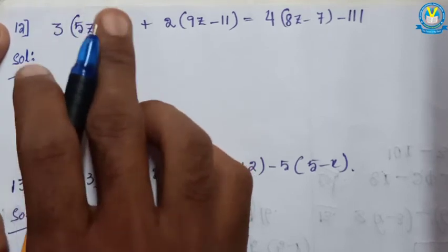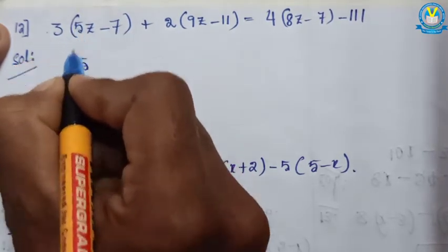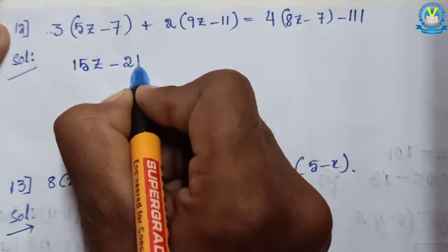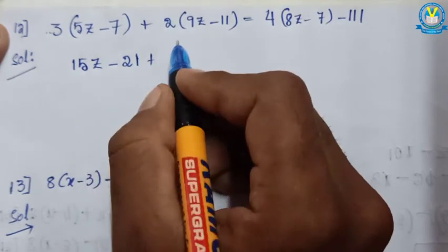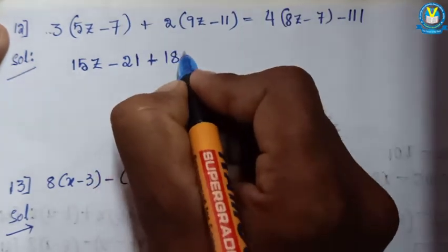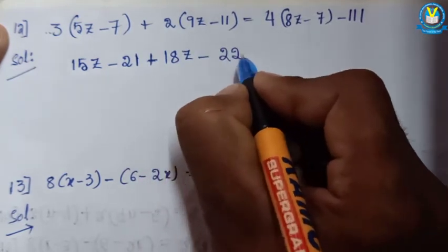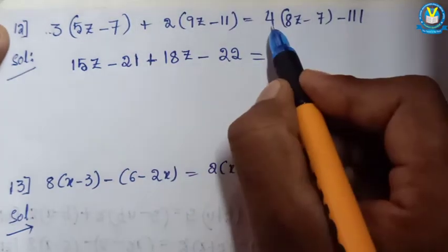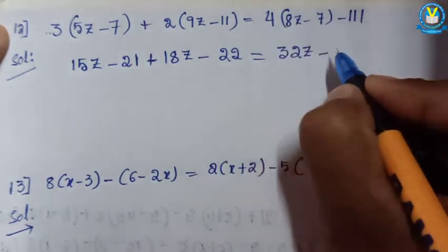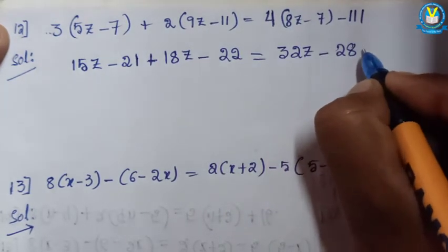Now I will multiply both variables: 3 into 5 gives 15z, plus into minus gives minus 21; plus 2 into 9z gives 18z, plus into minus gives minus 22; equal to 4 into 8z gives 32z, plus into minus gives minus 28, minus 1.